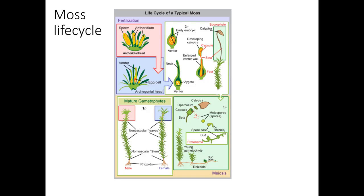Usually I start with the diploid part of the plant, which is the sporophyte. In a moss, each moss plant consists of a leafy structure — it's green, about a centimeter tall. That part of the moss, the green leafy part, is the gametophyte. So you remember in the moss, the gametophyte is the noticeable part, the green part.